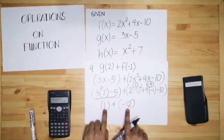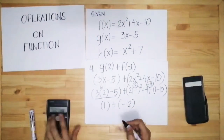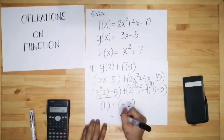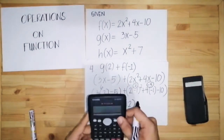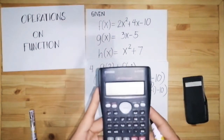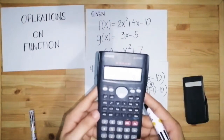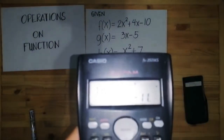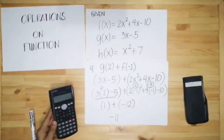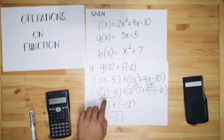Finally, combine the two results: 1 plus negative 12 equals negative 11. So the answer for this example is negative 11.